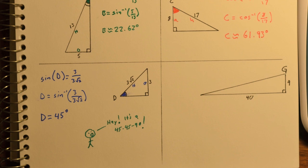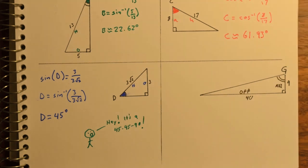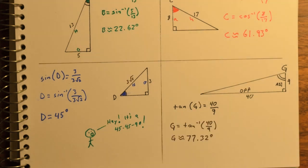Last example, we're given angle G. And so with its opposite and adjacent, we should use the tangent function. So the tangent of the angle, 40 over 9. So therefore, G is the inverse tangent of 40 over 9. We get 77.32 degrees.